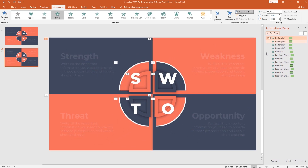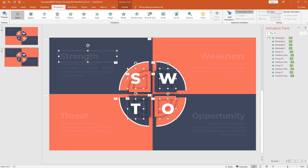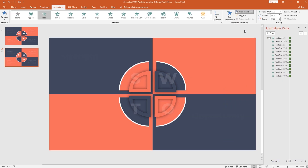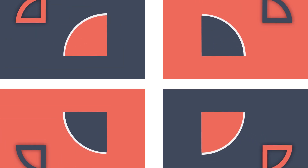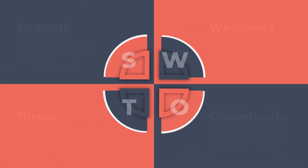So we can start adding animations on the text boxes. Holding the Ctrl button, I will select all the text boxes one by one. After selecting them all, from add animation, select fade. Set the animation time: start with previous, duration 0.50 second, and increase the delay to 1.50 second. You can play the animation to see your progress.